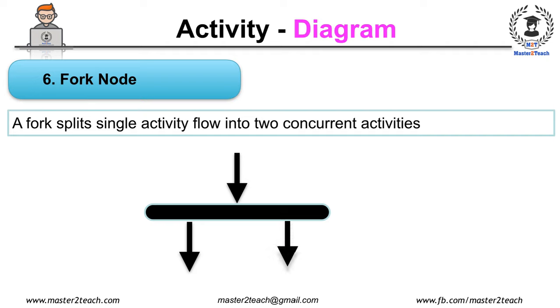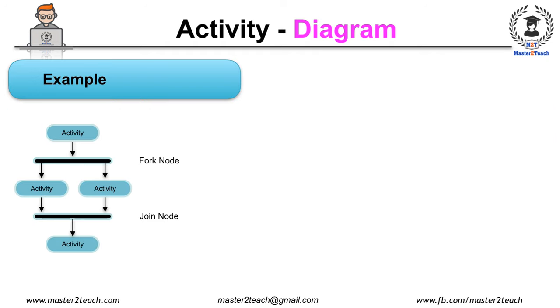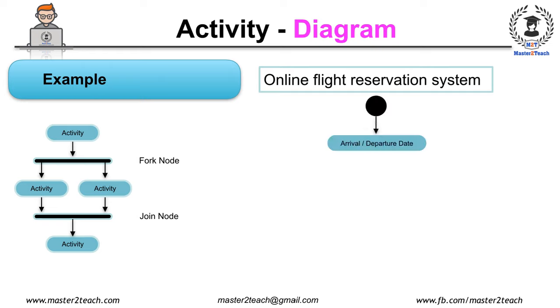For example, an online flight reservation system: the activity starts and needs to enter arrival and departure date. After that, they need to perform two activities: one search availability, whereas another enter personal detail which are represented by a fork symbol.